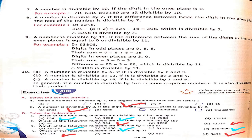Second question — a number is divisible by 2 if the digit in the blank place is divisible by 2. It means we look at the ones place. So option A — ones place — is correct.